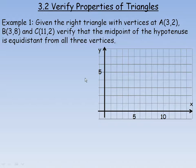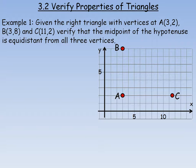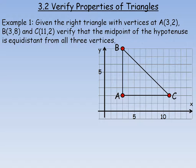A is the point, so we'll plot that point, and B is the point. And then C is at another point. So there's the three vertices and we'll join them to draw in the three line segments to make our right angle triangle. We're asked to verify that the midpoint of the hypotenuse is equidistant from all three vertices.